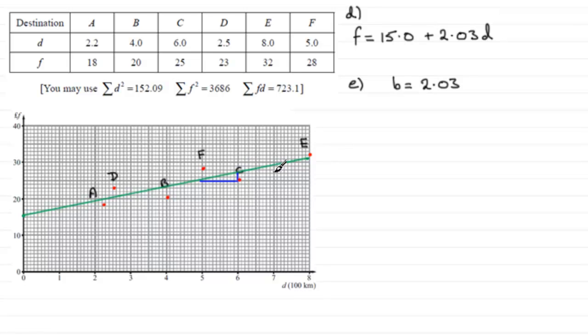Go one more unit across there, another 100 kilometres, and it goes up again by 2.03 pounds. So that's all you need to write, something along those kind of lines. In other words, for every extra 100 kilometres travelled, the cost goes up by 2.03 pounds.